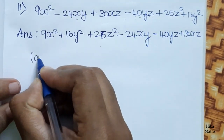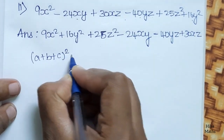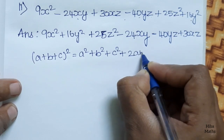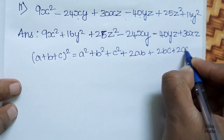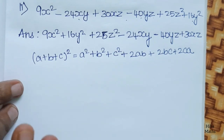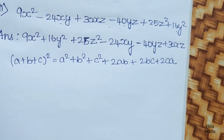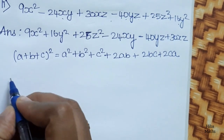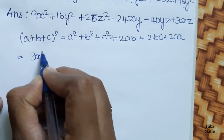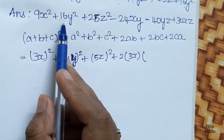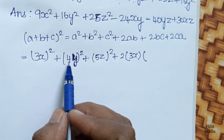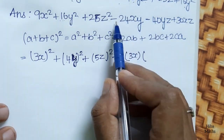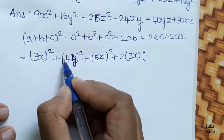The formula is (a+b+c)² equals a² plus b² plus c² plus 2ab plus 2bc plus 2ca. This is the expanded formula. Now we are going to compare this formula with our expression.